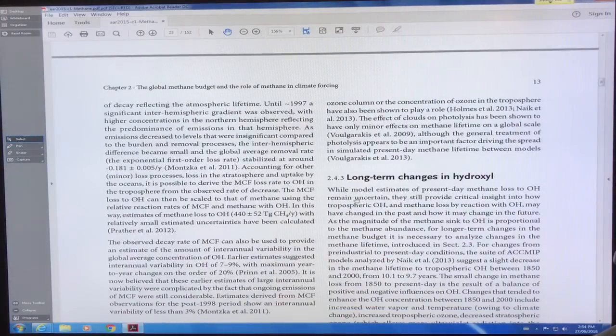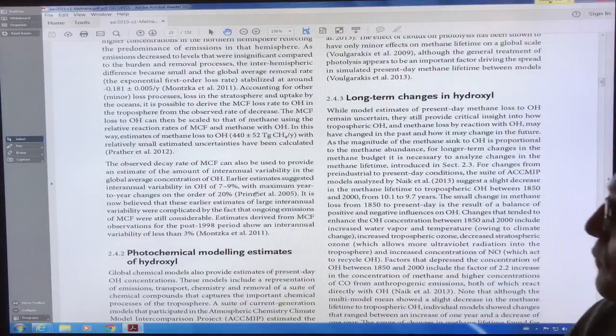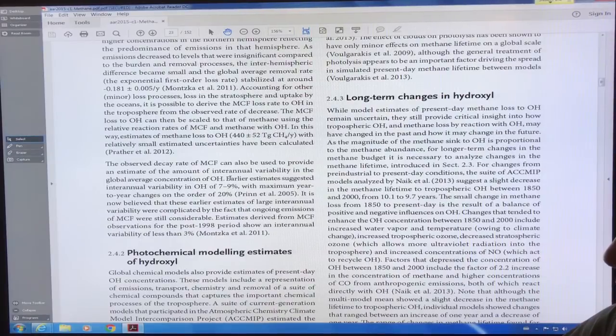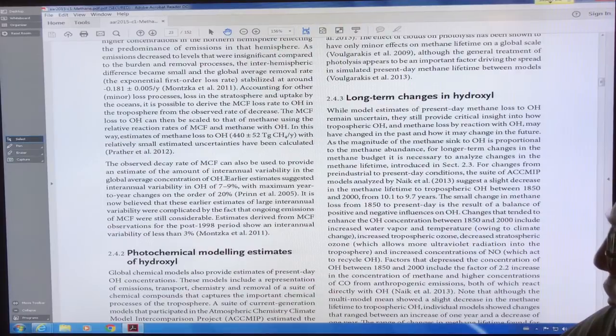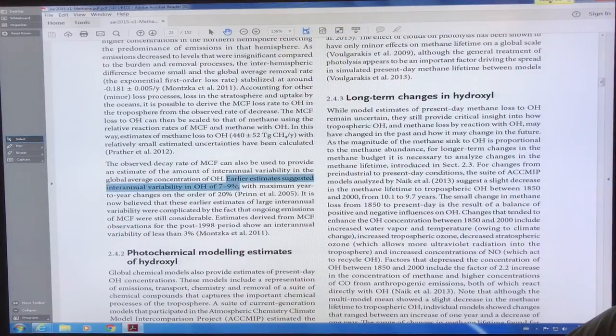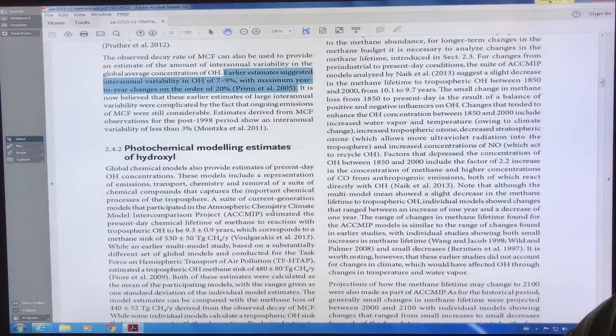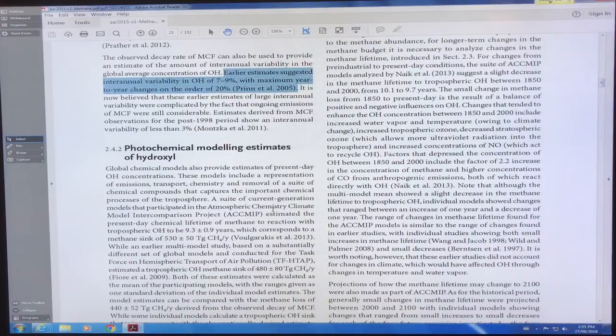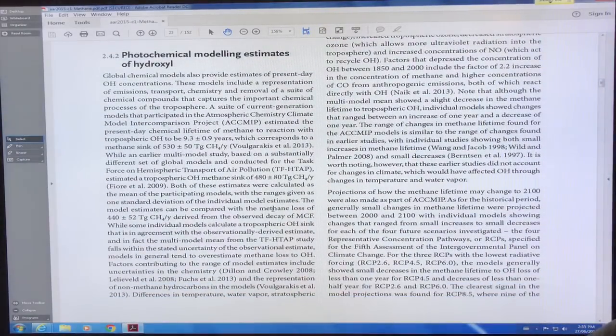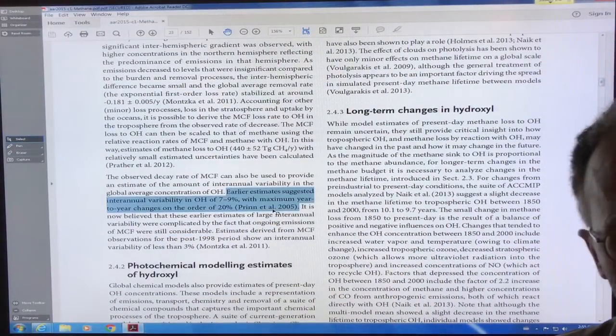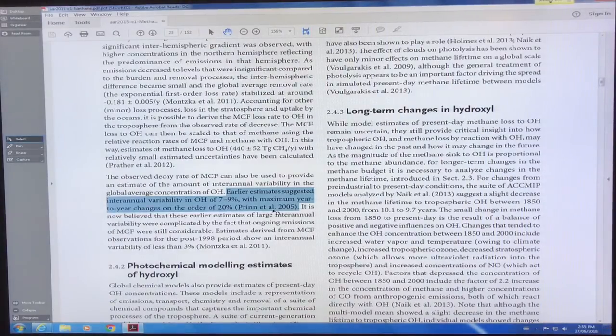We know the decay rates and stuff. So the bottom line is on the variability of OH in inter annual variability of OH, in early estimates, it was about 7 to 9% maximum year to year changes of 20%. And then we can do different modeling to find out what's going on with OH minus, and we can get longterm changes in hydroxyl, which is very important for methane lifetime.